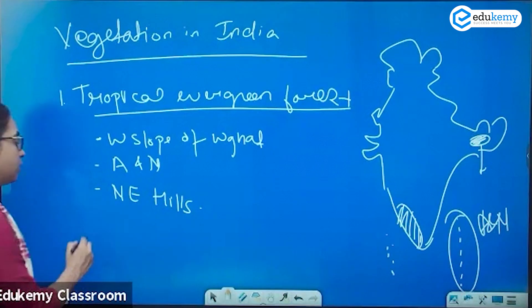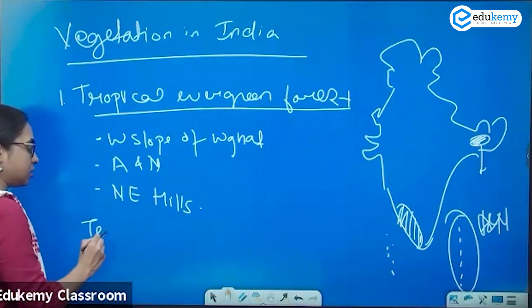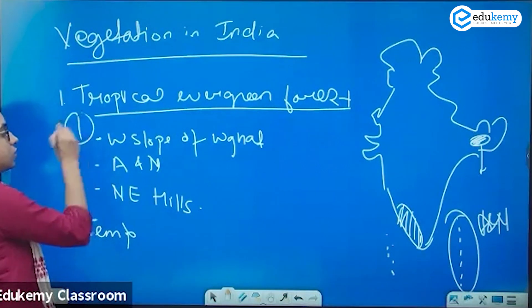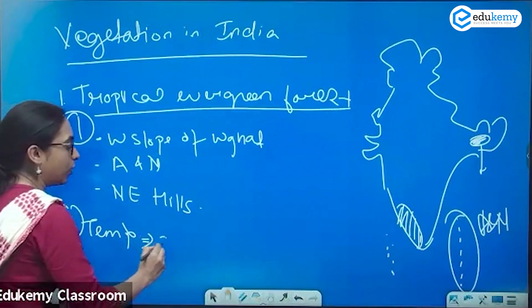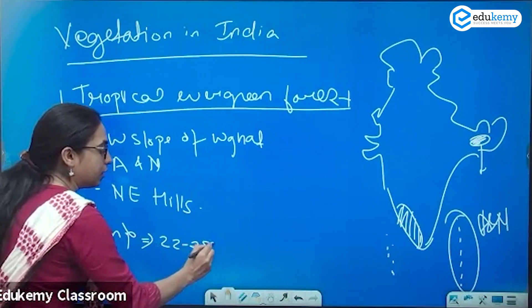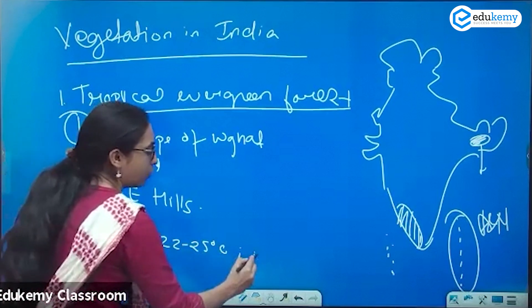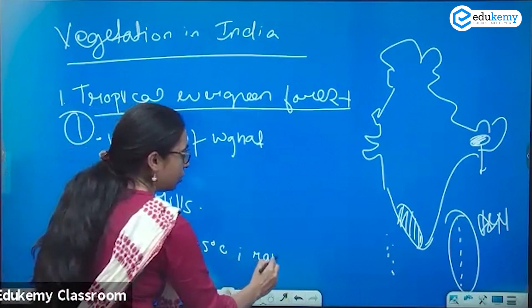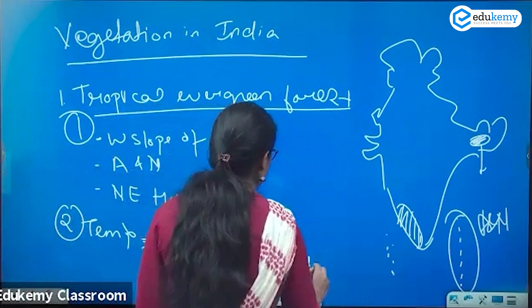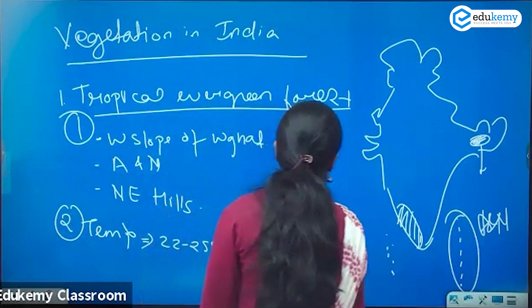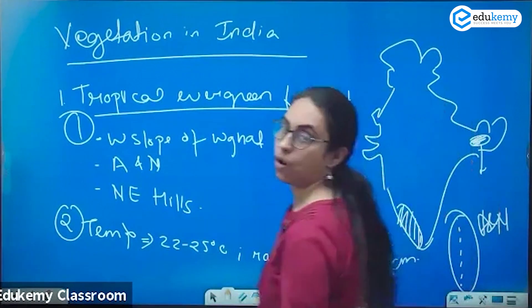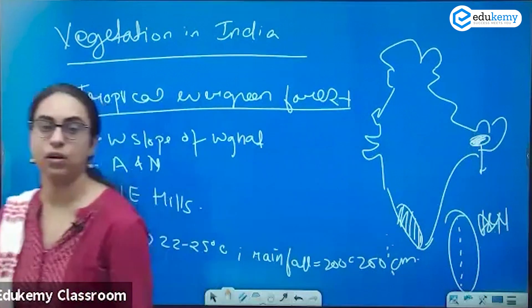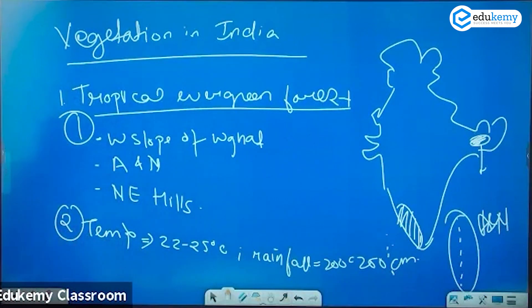What is the temperature? The temperature is 22 to 25 degree Celsius. What is the rainfall? The rainfall is 200 to 250 centimetres of rainfall.